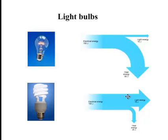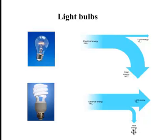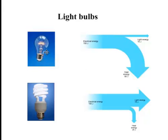Whereas for the energy-saving bulb, for the 100 joules of electrical energy that goes in, I get 75 joules of useful light out, and 25 joules of wasted heat energy. So the diagrams show us that the energy-saving bulb wastes much less heat energy than the old traditional filament lamp.